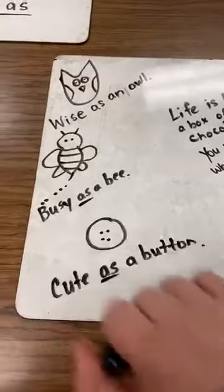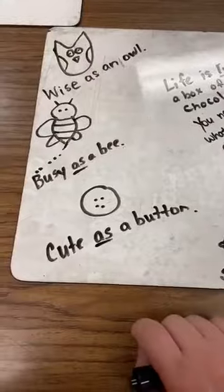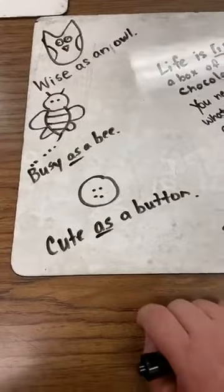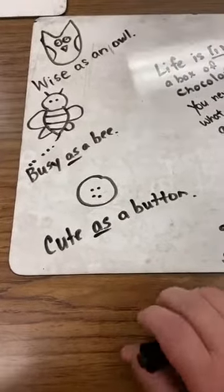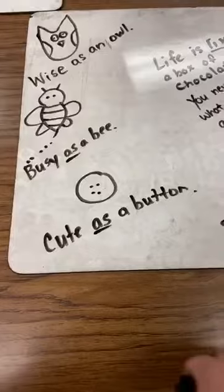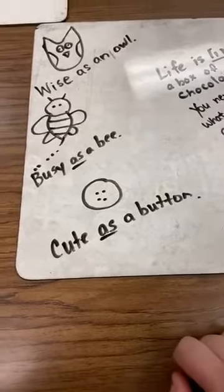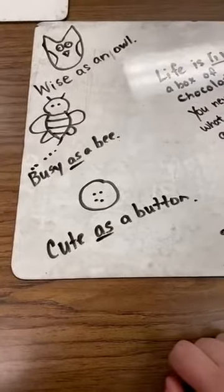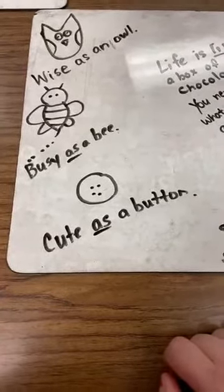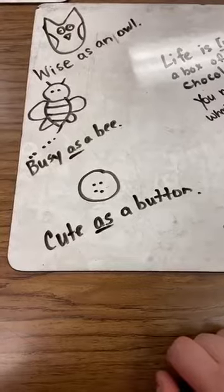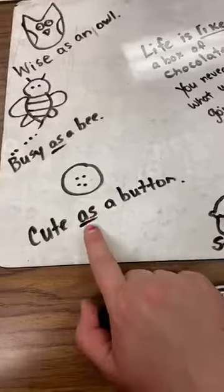The next one that I have is: busy as a bee. We know bees are always busy buzzing around trying to make stuff and collect pollen. It means that you're kind of like a bee — you're just busy like a bee. You can't sit still; you're always up and moving.